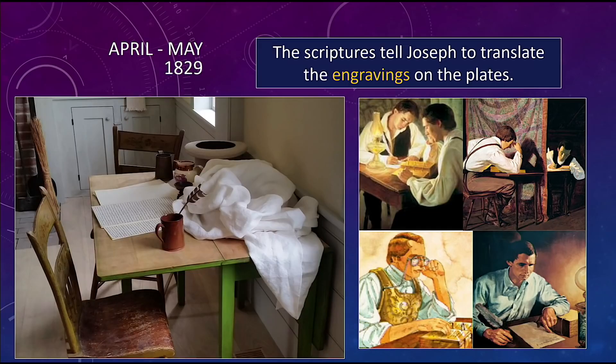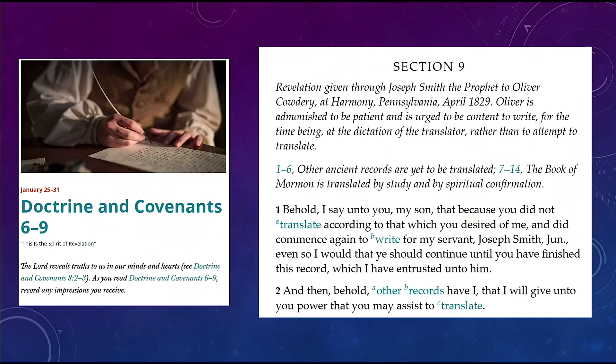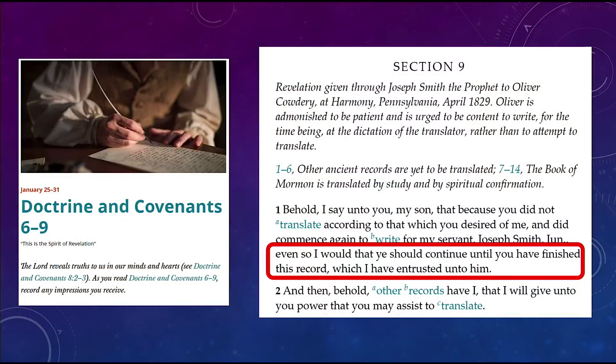The scriptures also tell Joseph to translate the engravings on the plates. In section 9, Oliver Cowdery tried to translate but wasn't able to. The Lord said, 'Continue until you have finished this record' — that was the abridged plates from Moroni's stone box. Then it said, 'Behold, I have other records I'll give you power to help translate.' But they had all the plates already — or did they? What are these other records? That's where we finally reach D&C 10.